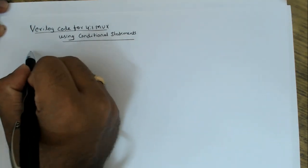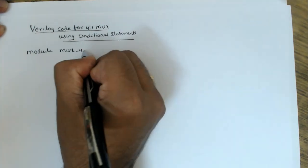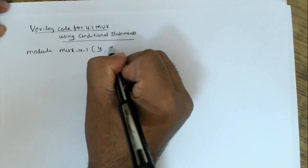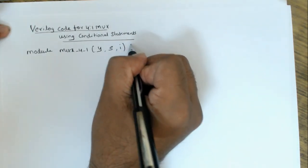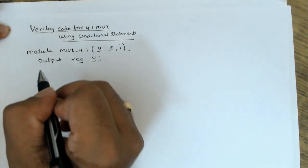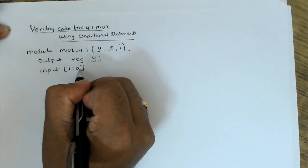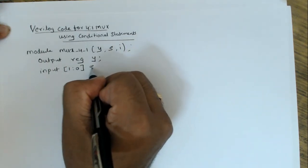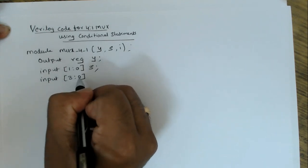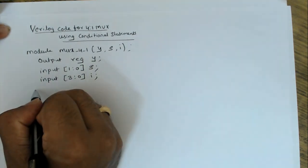In this code we write: module mux4_1. We define the outputs and inputs. Output is y, select line is s, and input is i. The output y must also be declared as reg because it will be used inside the always block. Input s is 1 down to 0 — two select lines are needed. Input i is 3 down to 0, a four-bit vector for the four mux inputs.